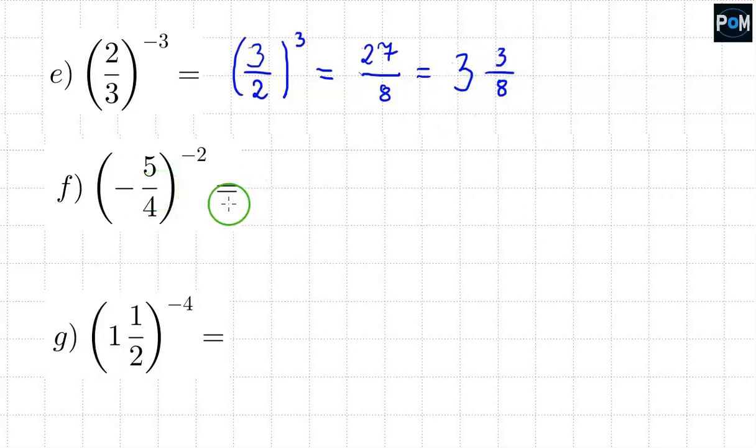In the example f, we again have a fraction. So we'll use the method with inverting the fraction again, because here we have a minus. We invert the fraction. Instead of 5 fourths, we get 4 fifths. And that will be raised to the second power. We pay attention to the fact that the minus, which was in the bracket, is there. It needs to be copied.